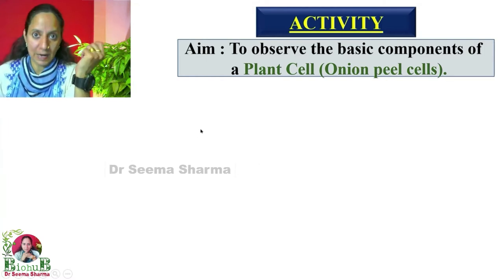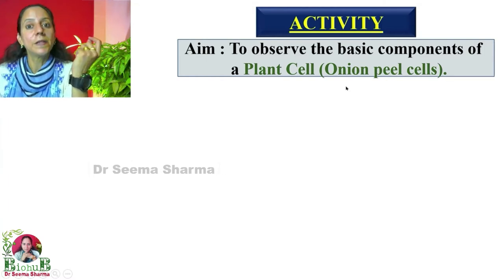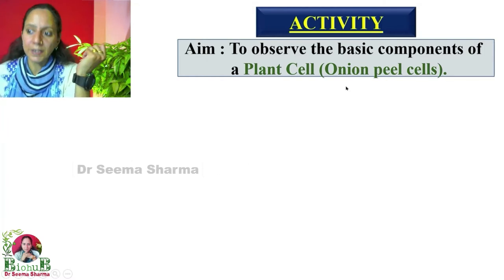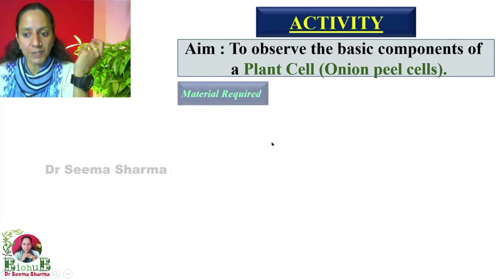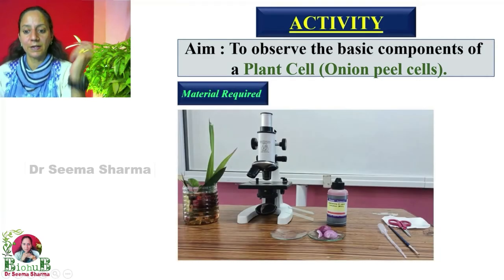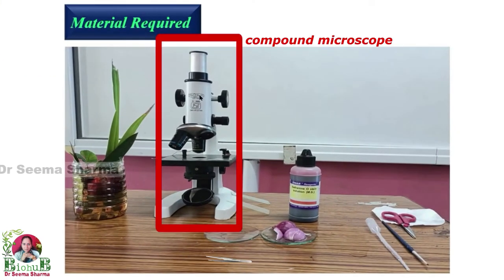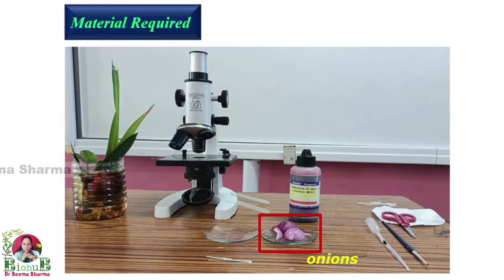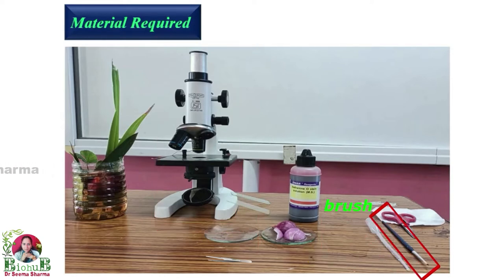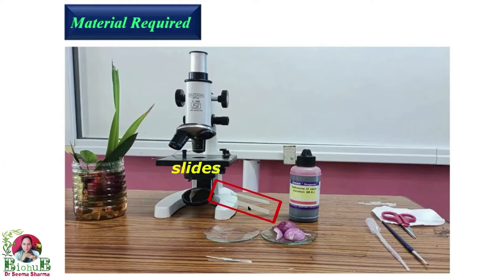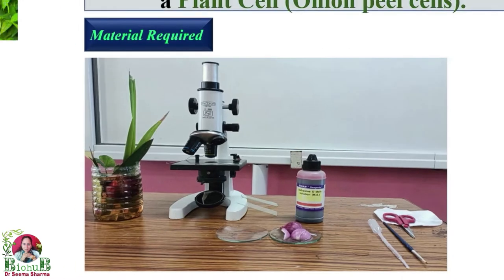We will observe plant cell components with the help of onion peel cells. Materials required: a compound microscope, an onion, dropper, brush, scissors, forceps, slides, cover slips, and one dye — safranin.